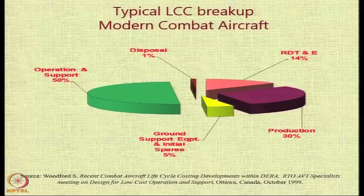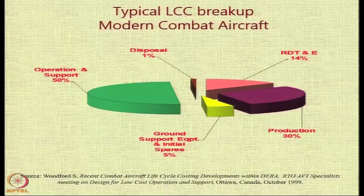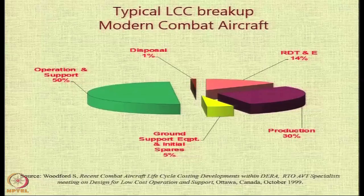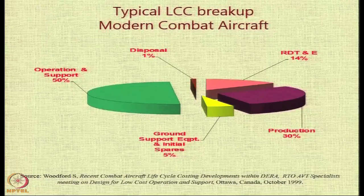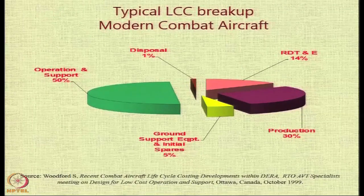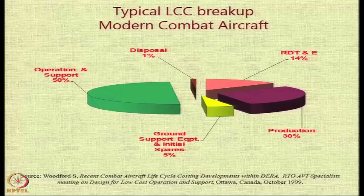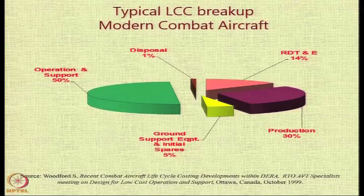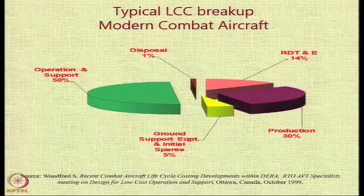Here is a typical breakdown of a combat aircraft. We notice that nearly half the cost of the life cycle is in operations and support, and around 30 percent is in the production of the aircraft. The ground support equipment and initial spares can be around 5 percent. The design and development cost and testing cost could be around 14 to 15 percent, and the disposal cost would be only about 1 percent.